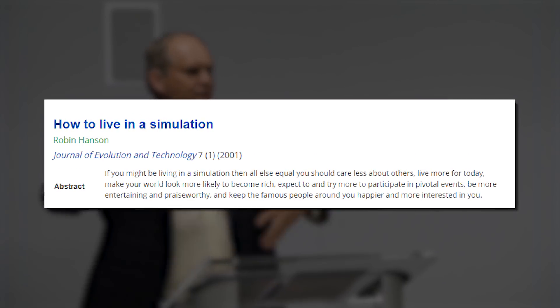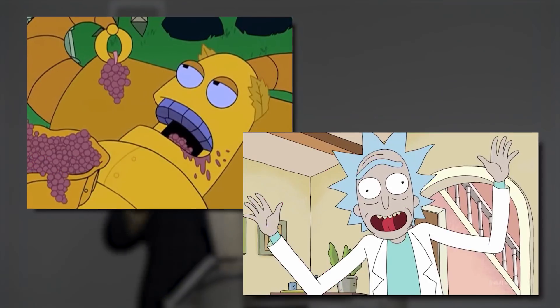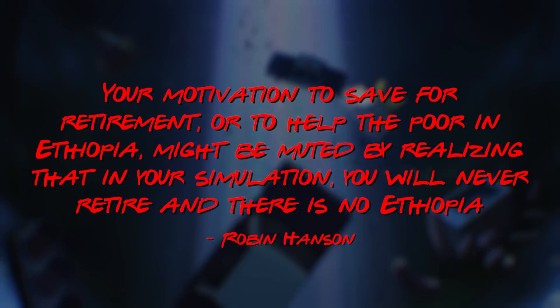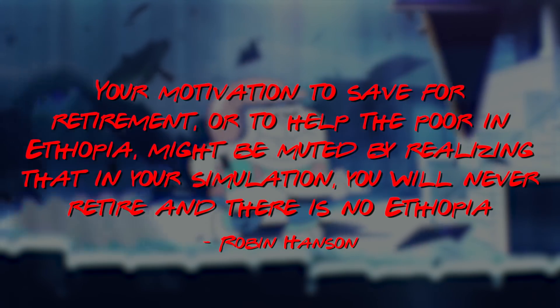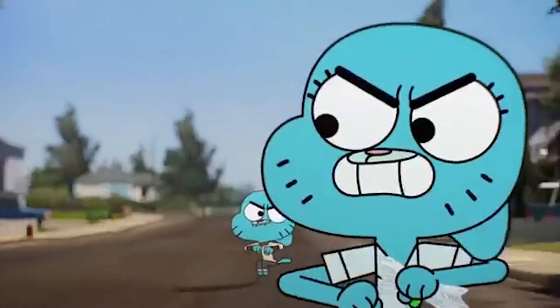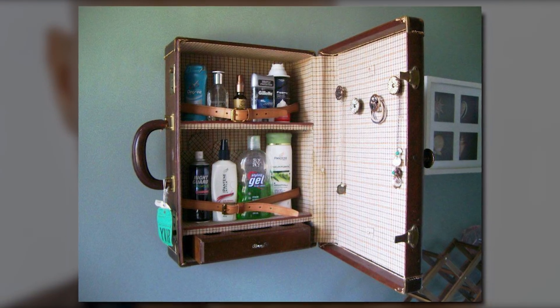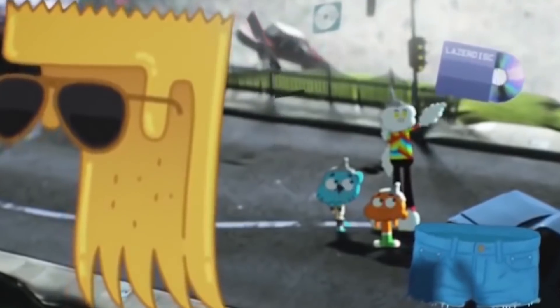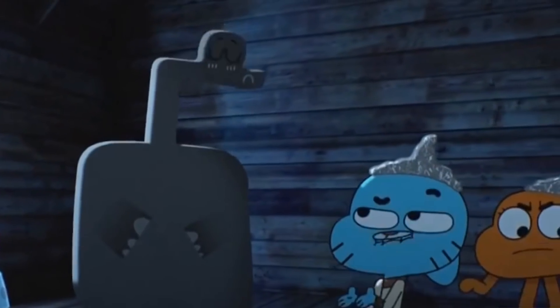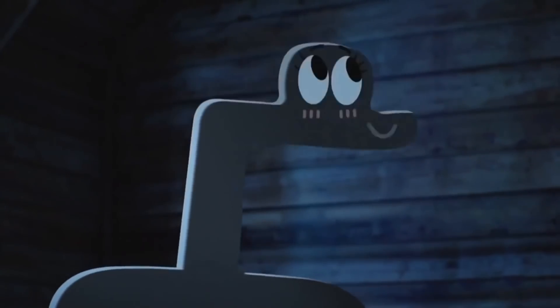Economist Robin Hanson proposes in his paper 'How to Live in a Simulation' that simulated persons granted self-awareness may begin to act more out of self-interest, as well as more nihilistically, armed with the knowledge that the simulation of themselves may end at any moment. To quote from his document: 'Your motivation to save for retirement or to help the poor in Ethiopia might be muted by realizing that in your simulation, you will never retire — and there is no Ethiopia.' Additionally, Hanson proposes that self-aware beings that are in turn self-aware of being simulated would likely strive to be more interesting and entertaining to avoid their simulation being turned off, deprogrammed, or being repurposed to a non-conscious part of the simulation — or, in the case of The Amazing World of Gumball, decommissioned and then relegated to an existence in the Void. There's even evidence supporting this: in the episode where the Void is introduced, we find that Molly had been relocated to the Void for little other reason than she's boring.